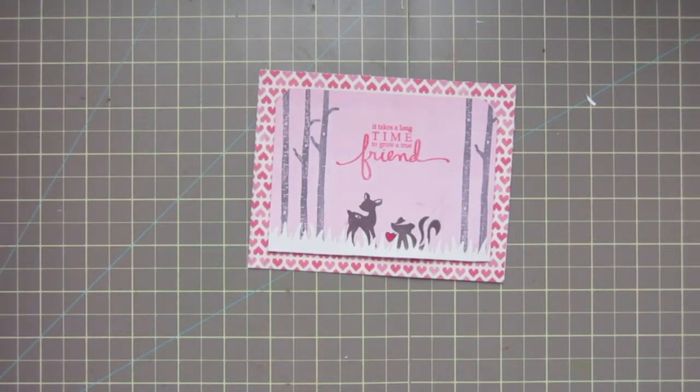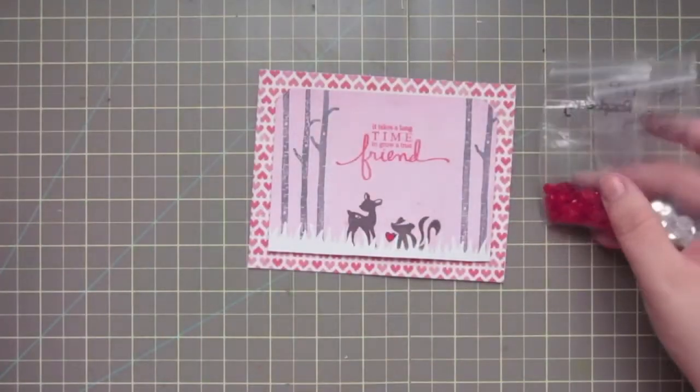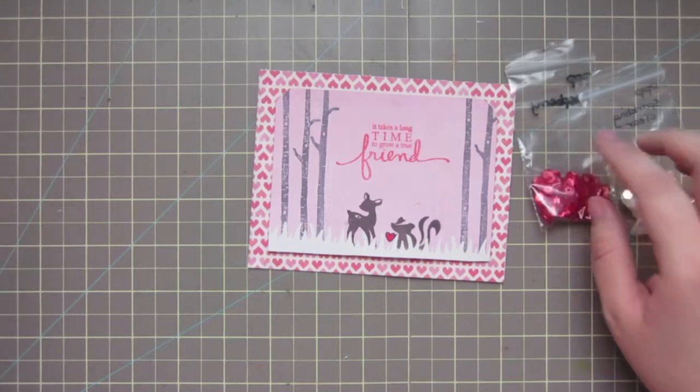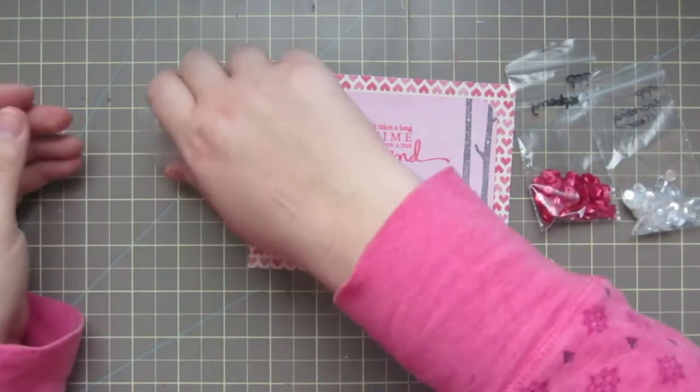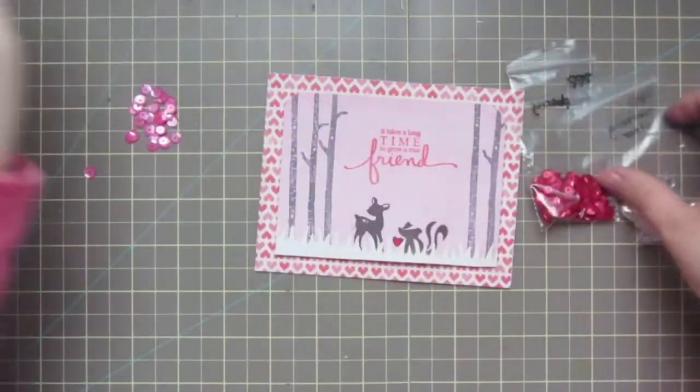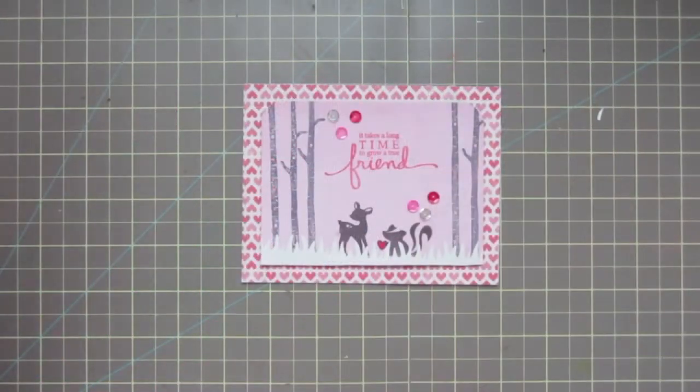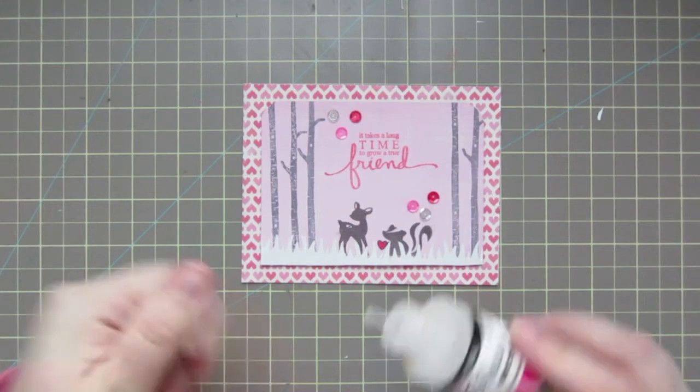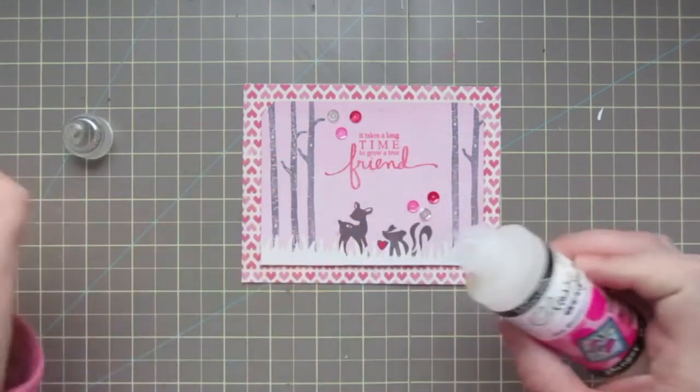Last, I'm just going to take some sequins from Pretty Pink Posh and arrange some on there. I'm not sure how they're going to go yet, but now that I have that how I want it, I'm just going to take some glossy accents and adhere those down.